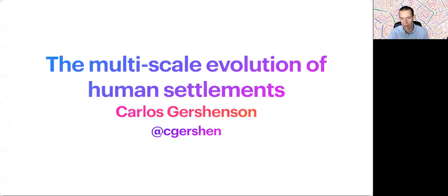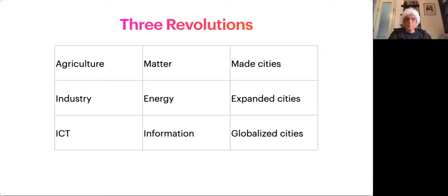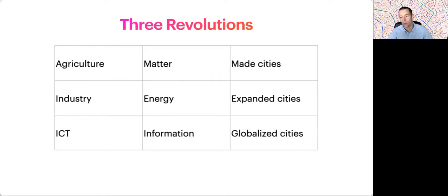I will first give a general overview of the evolution of human settlements, then focus on Mexico City. Throughout our history, we can identify three revolutions: the agricultural revolution, the industrial revolution, and the information revolution. The first dealt with the control of matter, the second with energy, and the third with information. Thanks to the first, cities were able to arise — to have enough resources to sustain large populations. This was expanded with the industrial revolution. Now, with information technology, we have globalized cities in the sense that physical distances, when speaking about information, become less relevant.